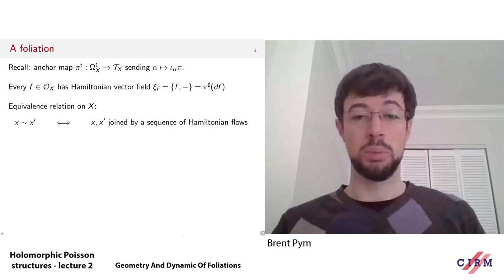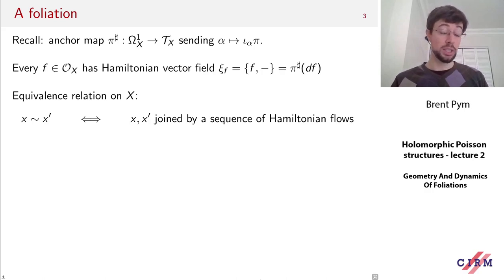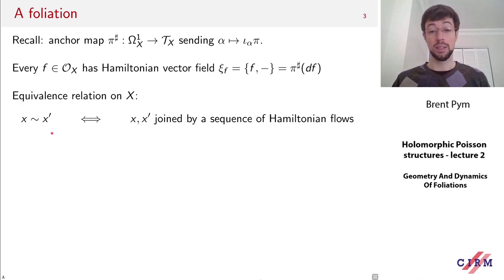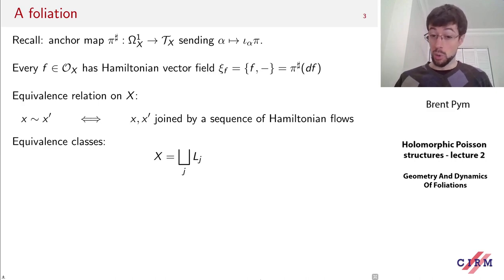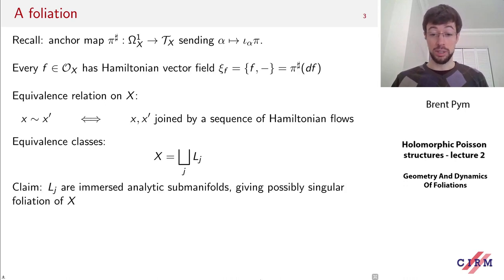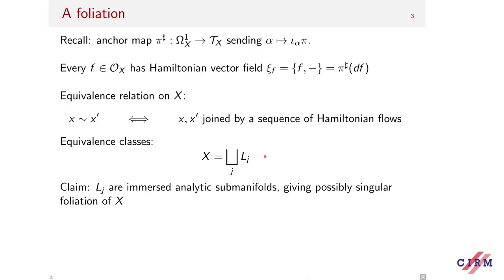You can ask the question: suppose I have two points in this manifold X — is it possible to join them by a sequence of flows of Hamiltonian vector fields? This defines an equivalence relation on X: we say two points x and x' are equivalent if and only if we can find a sequence of Hamiltonian flows that takes one to the other. This equivalence relation partitions X into equivalence classes L_j, which are actually immersed analytic sub-manifolds, and they fit together to give a possibly singular foliation of X.